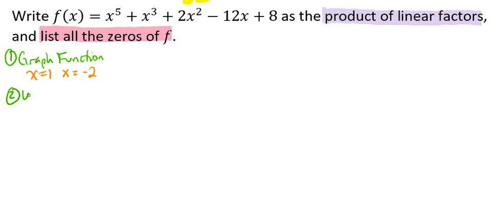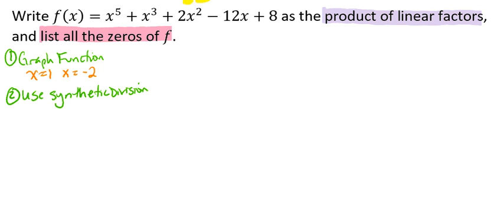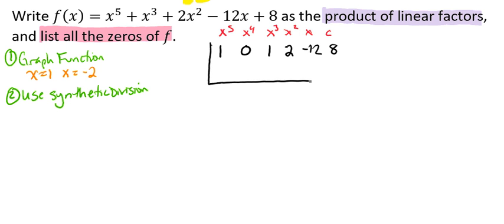The second thing we're going to do is use synthetic division, which will allow us to break this down into something we can hopefully factor to get all the rest of our zeros. Let's take our leading coefficients. Notice there's a gap from the 5th degree to the 3rd degree — there's no 4th degree term, so we'll need a 0 as a placeholder. So our coefficients are: 1, 0, 1, 2, negative 12, and 8.